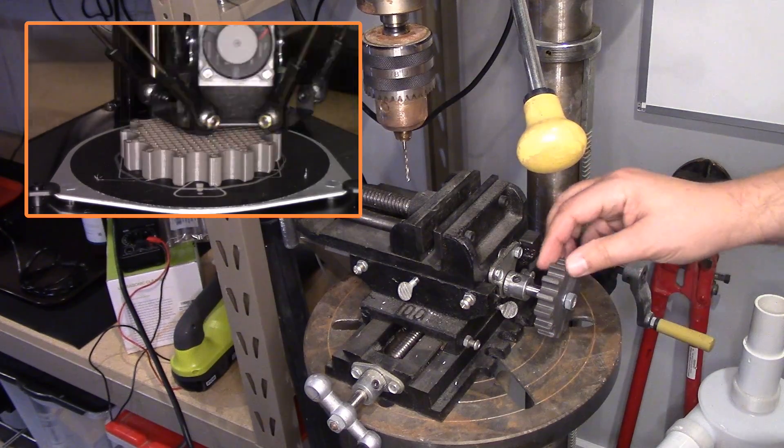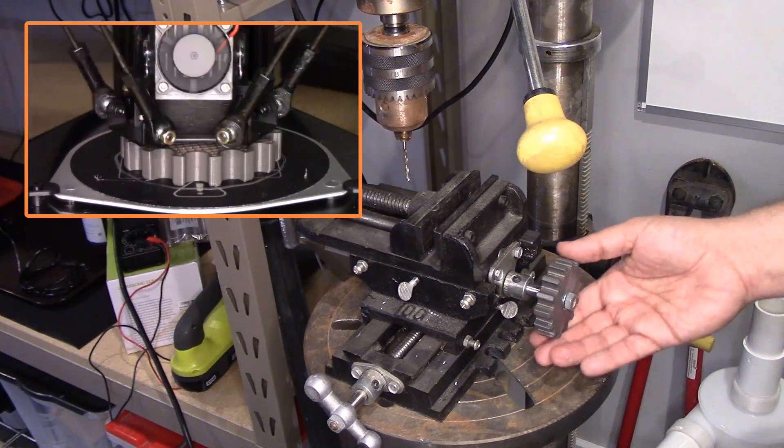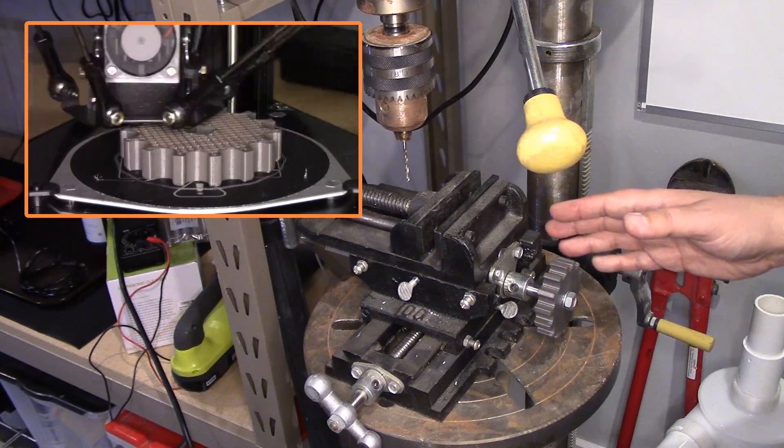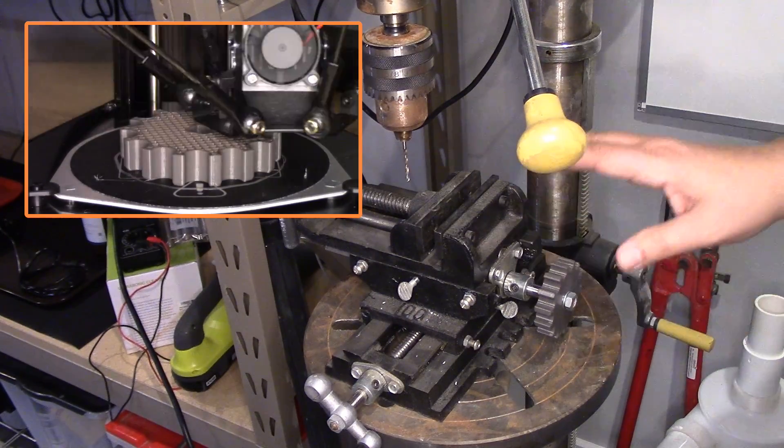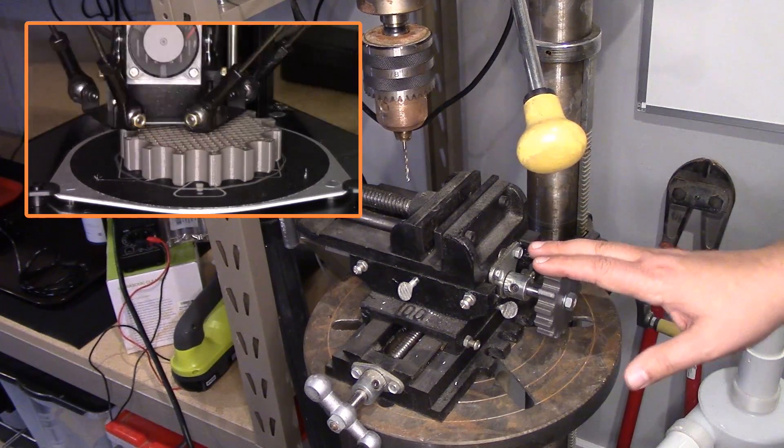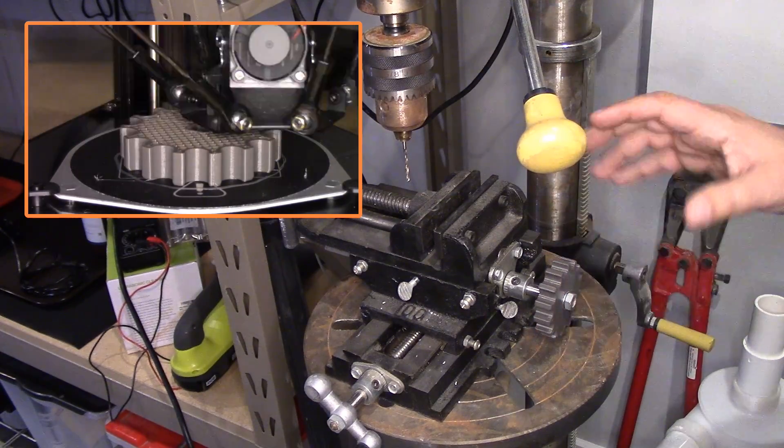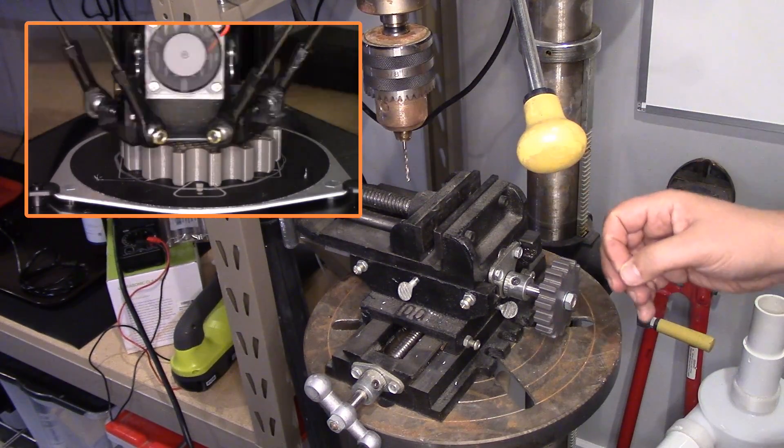What was nice about Fusion 360 is the filleting and the rounding of this works out really easy in Fusion 360. However, again, you could have done this in OpenSCAD, Tinkercad, all kinds of other stuff, as I mentioned. It's just really how you think through this.